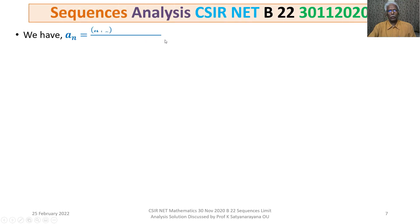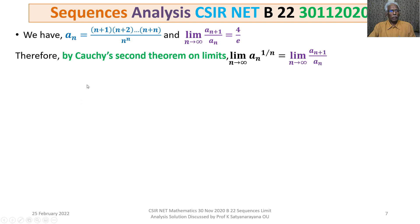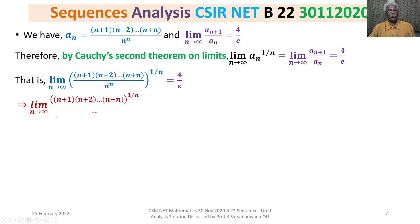We have computed lim a_{n+1}/a_n = 4/e. By Cauchy's second theorem on limits, lim a_n^(1/n) equals lim a_{n+1}/a_n = 4/e. Therefore the limit of [(n+1)(n+2)···(n+n)]^(1/n) / n is 4/e.